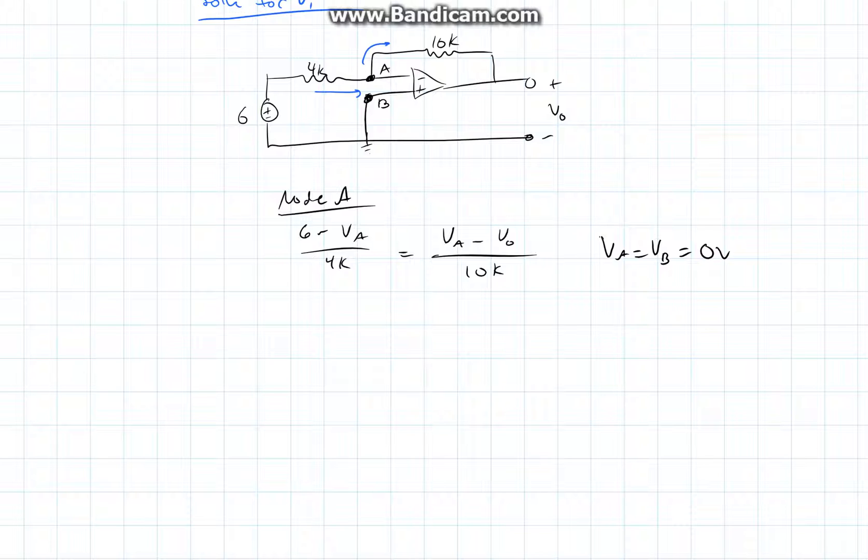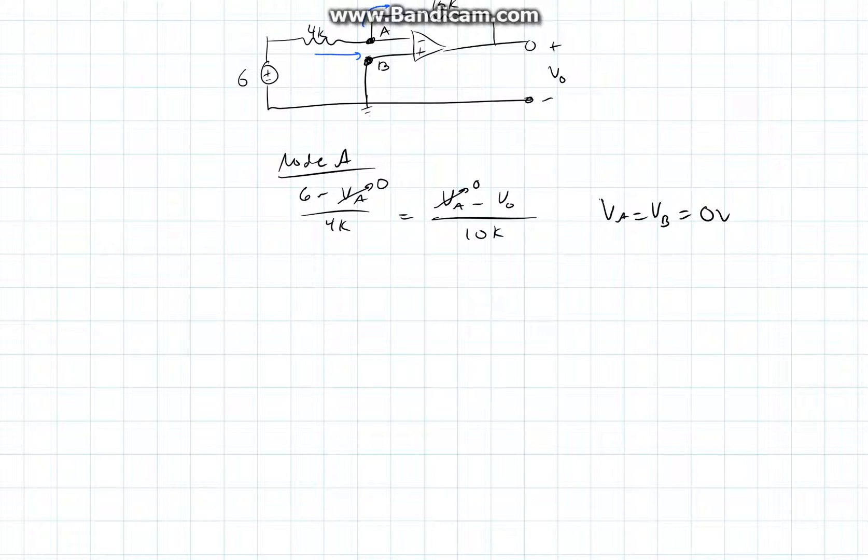So by plugging in 0 volts for VA, we'll get the following equation. From this, we can easily solve for V0.